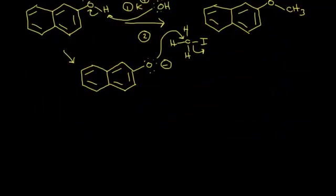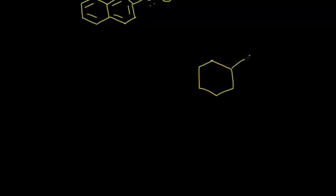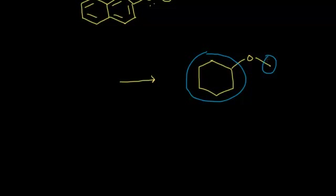Let's think about synthesizing an ether. If given a problem asking what you need to synthesize a specific ether, you analyze the alkyl groups attached to the ether — for example, a methyl group and a cyclohexyl group. One of those will be used for your alkyl halide. You want to use the least sterically hindered group since it's an SN2 mechanism, so you go with the methyl group. In the second step, you'd add methyl iodide, which is the least sterically hindered and improves your yield. In the first step, you'd add a strong base like sodium hydride.